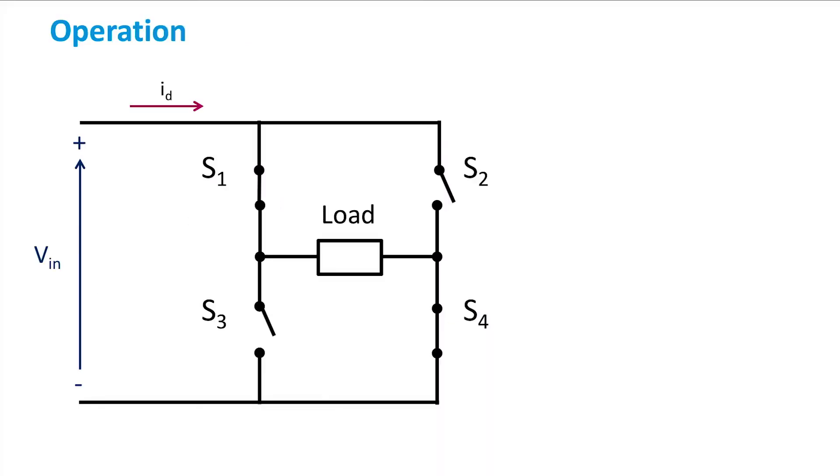When S1 and S4 switches are closed, or switched on, the current ID will start flowing through them and passing into the load. Let's now visualize how the load voltage Vout changes with time.